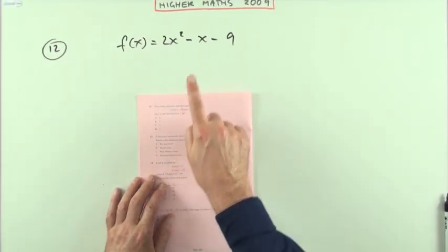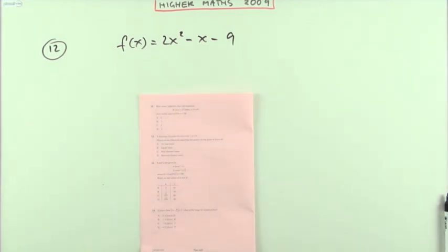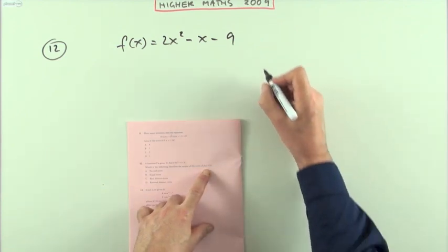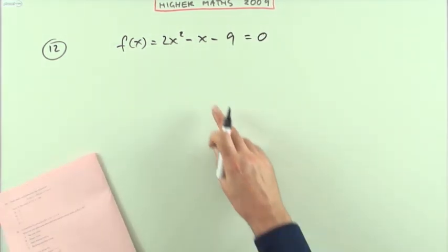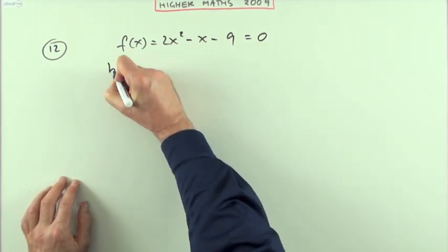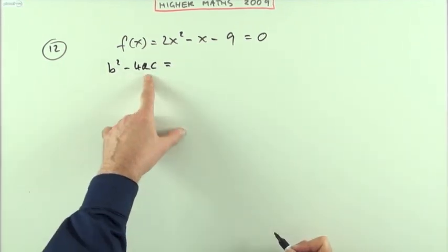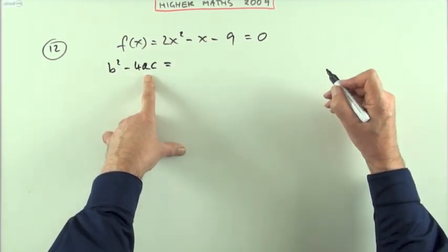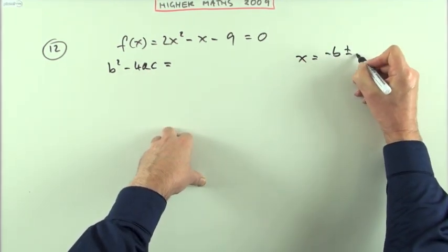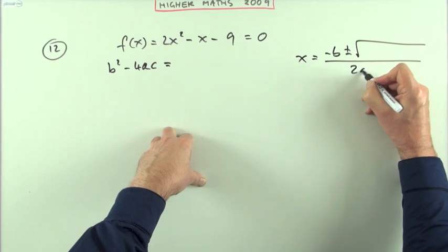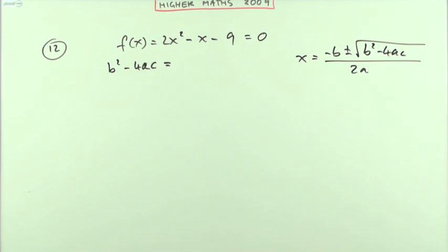Now, number 12 here. A function is given by this expression here, a quadratic, and it says, which of the following describes the nature of the roots for this equal to 0, for that expression equal to 0, this quadratic equation. Well, straight away, the discriminant is going to give you that. B squared minus 4ac. Remember, B squared minus 4ac is the critical part in the formula which gives you the solutions of a quadratic. Negative B plus or minus the square root over 2a of B squared minus 4ac. It all depends what goes into that square root.